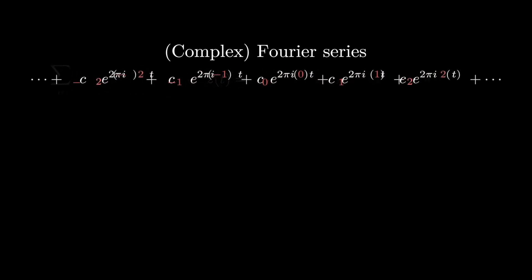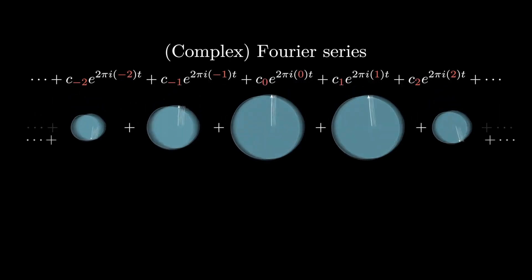As a quick reminder, recall that any two-dimensional trajectory can be written as a complex Fourier series, where each term is a time-dependent complex number that can be thought of as an arrow that rotates at a specific frequency.